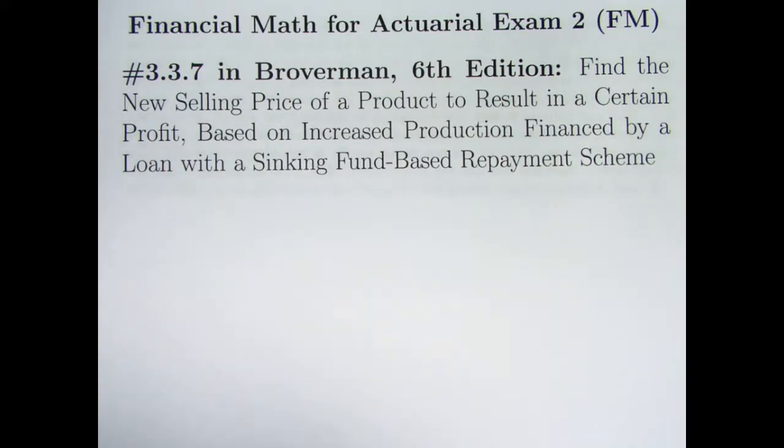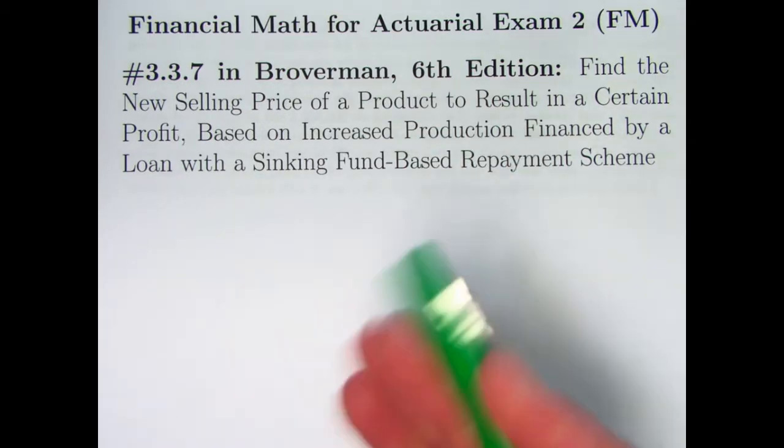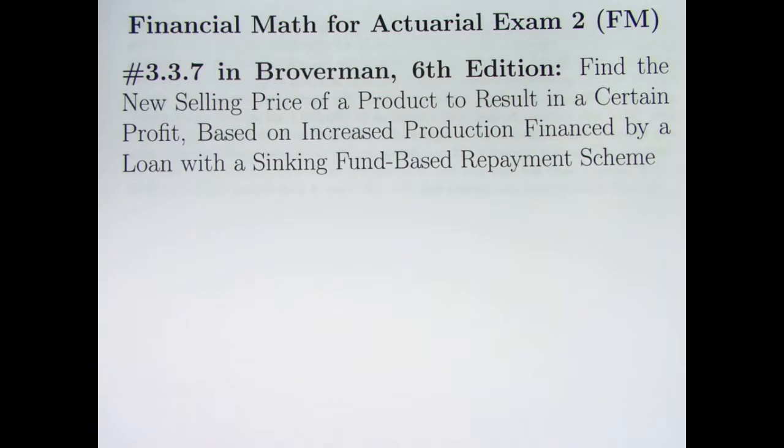Problem 3.3.7 in Broverman's book is not an old actuarial exam problem, and it's probably not a type of problem that you'd see in an actuarial exam, but it was so practical, so interesting in that way, that I decided I wanted to do a video on it anyway. It's a pretty cool problem. It's got a long description here and a long problem statement, but I want to convince you that even when you encounter problems like this, if you just break them down piece by piece, you too can solve such a problem.